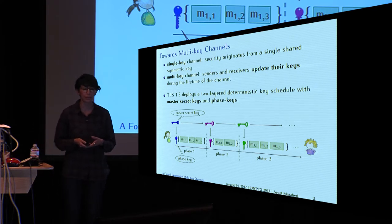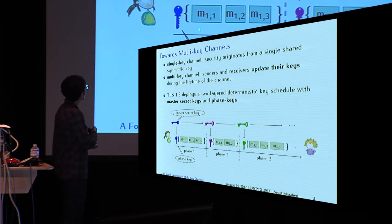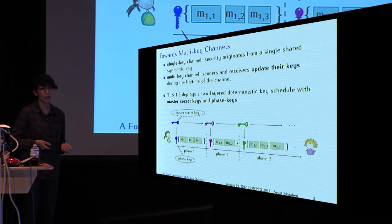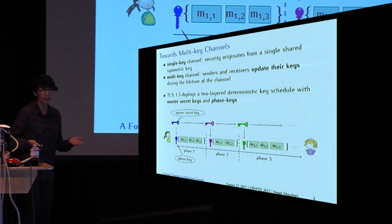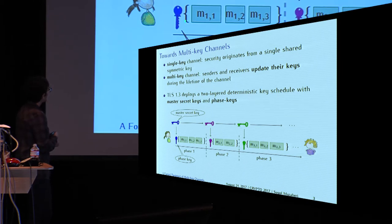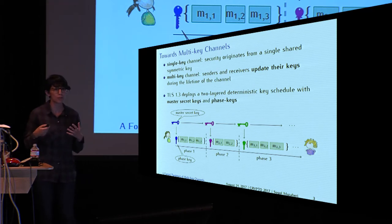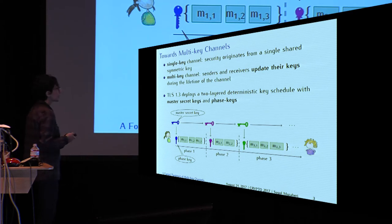Additionally, TLS 1.3 deploys a two-layered deterministic key schedule where we have master secret keys and phase keys. The first master secret key is derived from the key exchange protocol or the TLS handshake, and the next master secret keys are derived from the previous ones deterministically. Phase keys are used to provide confidentiality and integrity in each phase, and they are derived deterministically from the current master secret key. This type of multi-key channel allows us to define two advanced security notions, which say that some security should be provided even if a master secret key or phase keys are compromised.